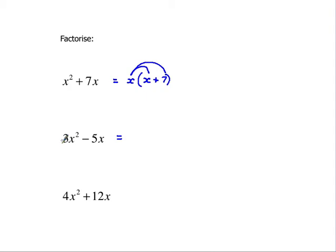Here, there's no number that goes into 3 and 5, so I can't take a number again. But I can take x outside the brackets. x lots of something will give me 3x squared — x times x is x squared, so x times something to give me 3x squared must be 3x. And then x lots of something to give me minus 5x — that's just minus 5.